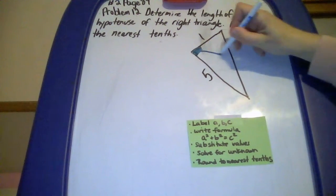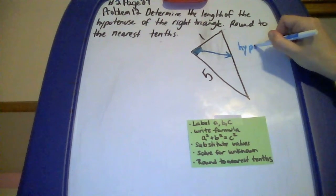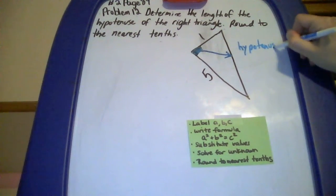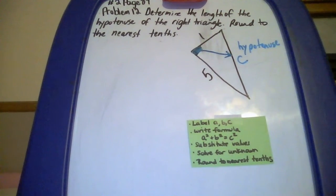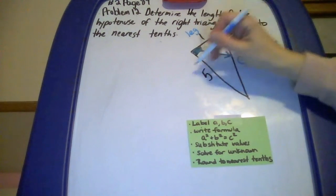The side that's opposite from that is the hypotenuse, so we're going to label this with a C. So this is my C. The other two sides are my legs. Here's one of the legs, and here's the other leg.